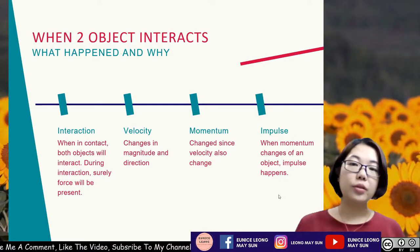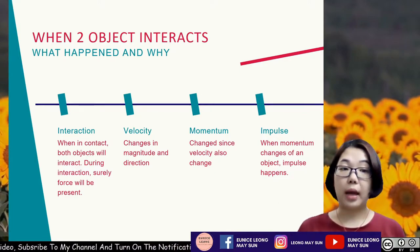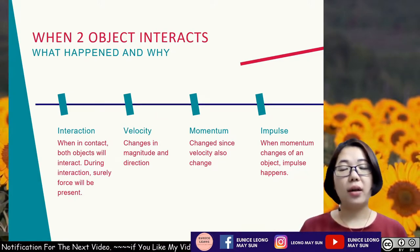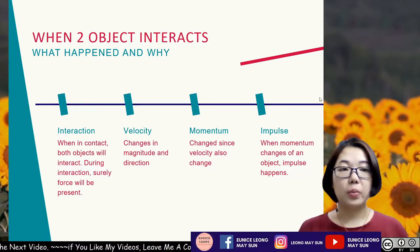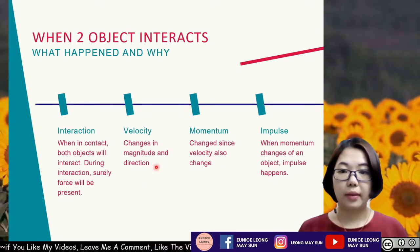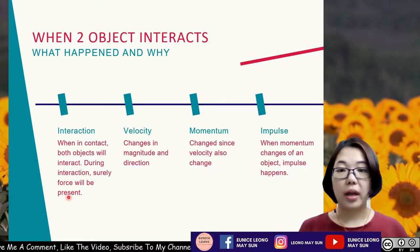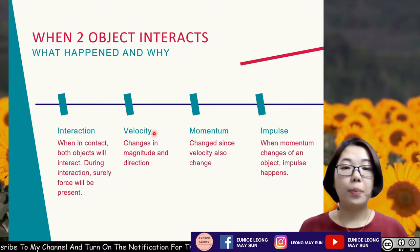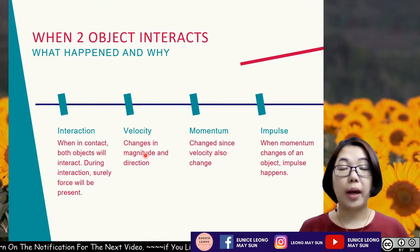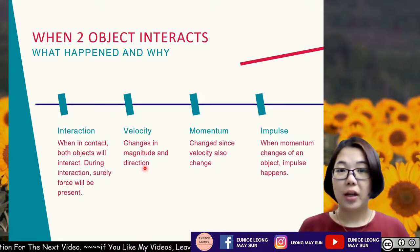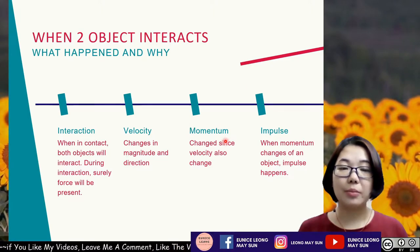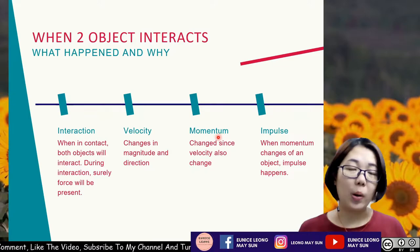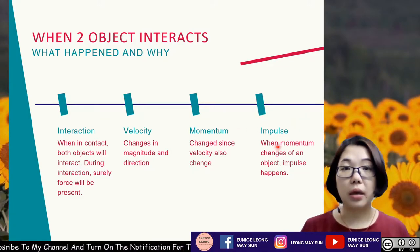When two objects interact, what actually happens and why? When two objects are in contact, both objects will interact. When there's interaction, forces are present. With that force, the object will change in velocity by changing its magnitude or direction. So when the velocity changes, it will also cause momentum to change. And the change in momentum before and after the collision is what we know as impulse.